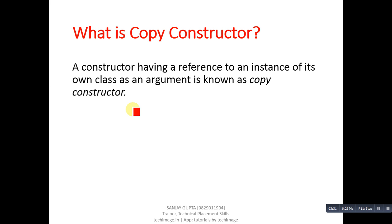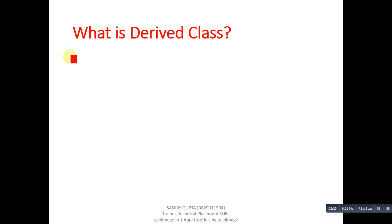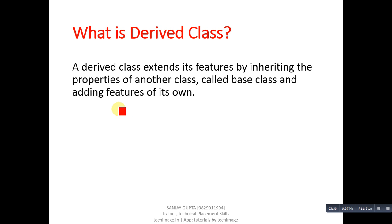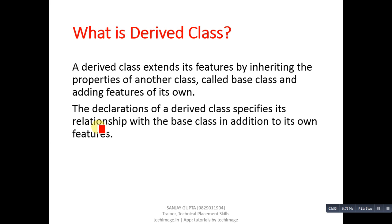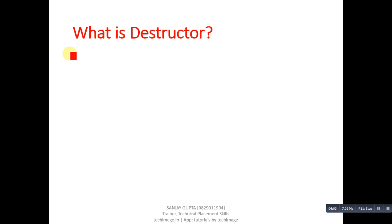Next question: what is a derived class? Answer: a derived class extends its features by inheriting the properties of another class called the base class, and adding features of its own. A derived class contains features of the base class as well as new features of its own, and its declaration specifies its relationship with the base class.